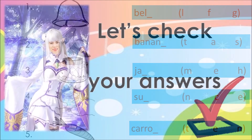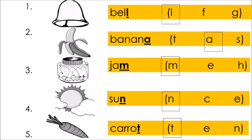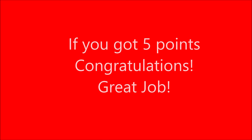Let's check your answers. Number one — the picture is bell. The missing last letter is L. Number two — the picture is banana. The missing last letter is A. Number three — the picture is jam. The missing last letter is M. Number four — the picture is sun. The missing last letter is N. Number five — the picture is carrot. The missing last letter is T. If you got five points, congratulations! Great job!